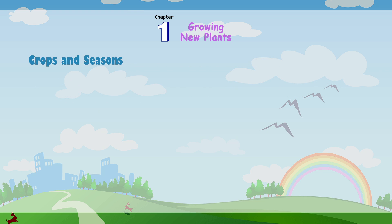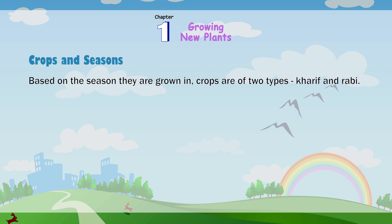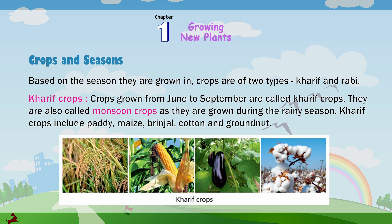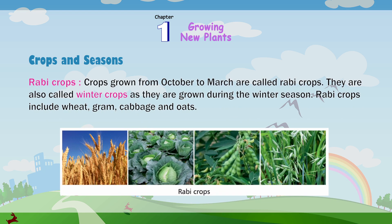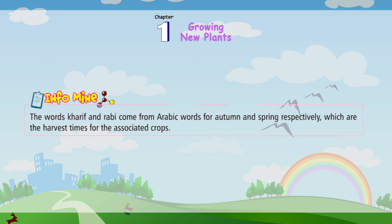Crops and seasons. Based on the season they are grown in, crops are of two types: Kharif and Rabi. Kharif crops are grown from June to September and are also called monsoon crops, as they are grown during the rainy season. Kharif crops include paddy, maize, brinjal, coconut and groundnut. Rabi crops are grown from October to March and are also called winter crops. Rabi crops include wheat, gram, cabbage and oats. The words Kharif and Rabi come from the Arabic words for autumn and spring respectively, which are the harvest times for the associated crops.